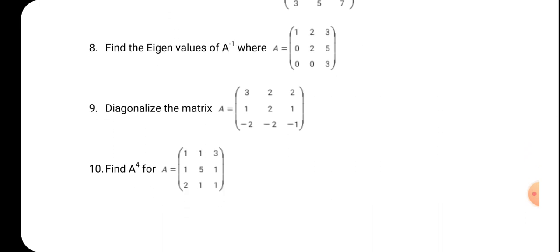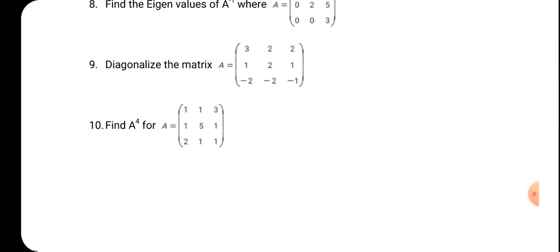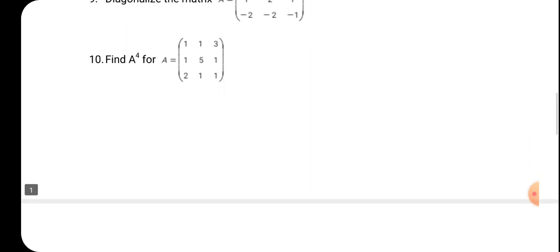Ninth: diagonalize the matrix. In order to say a square matrix is diagonalizable, it must satisfy the property P inverse AP equal to D. Under that condition, A is called diagonalizable — just verify the condition. Tenth: find A to the power 4 for a given matrix. Don't calculate A power 4 directly; instead, use the Cayley-Hamilton theorem or the diagonalization process to get A power 4.